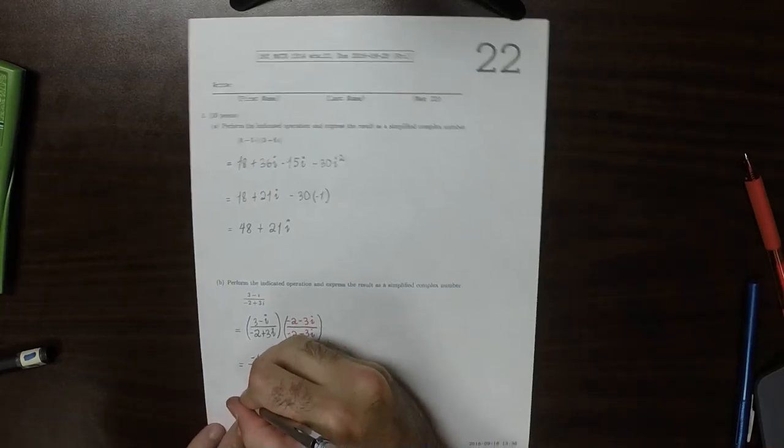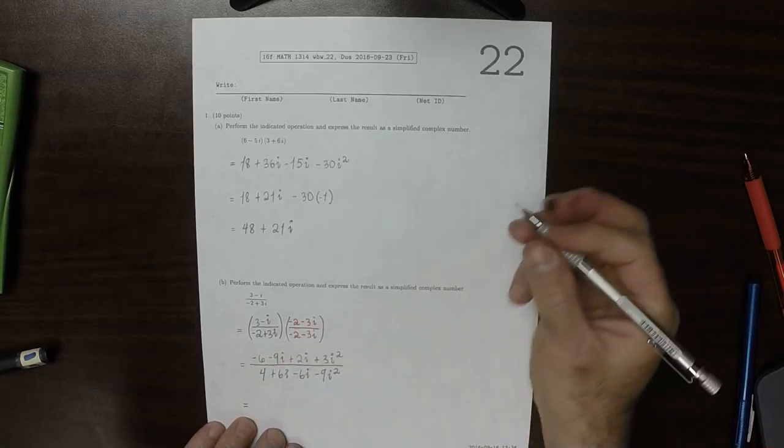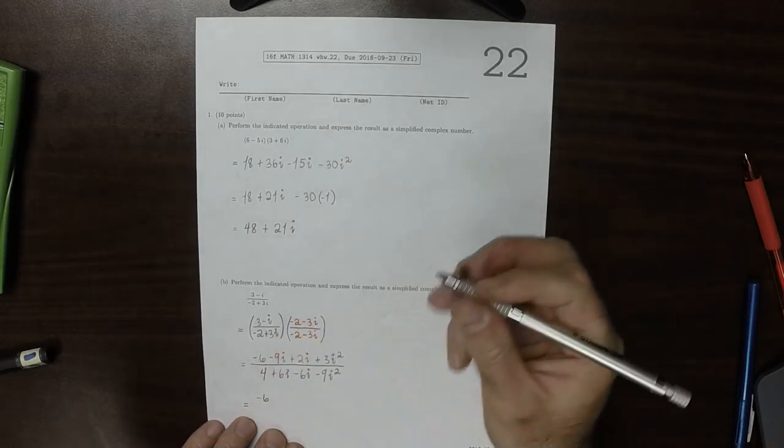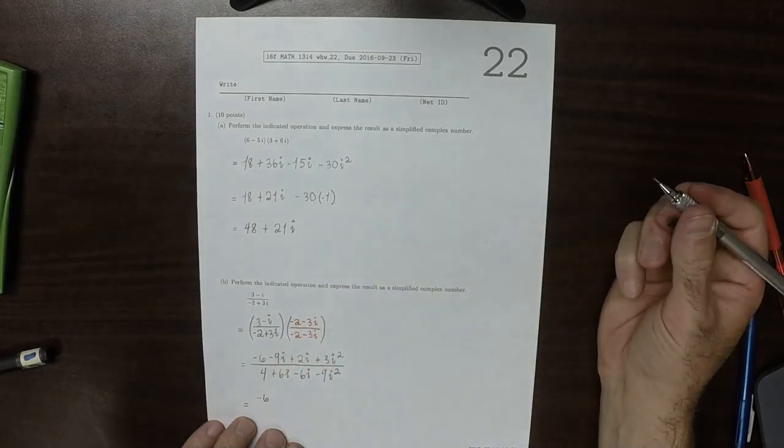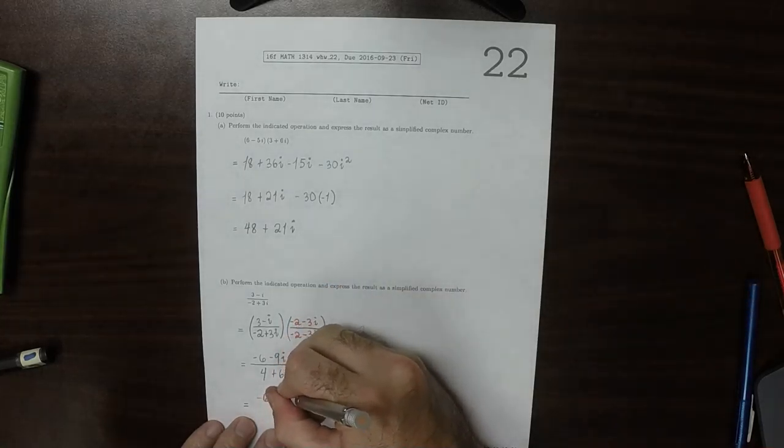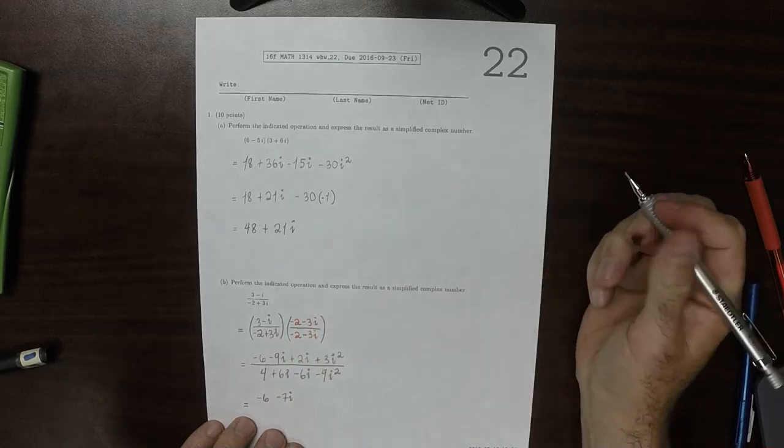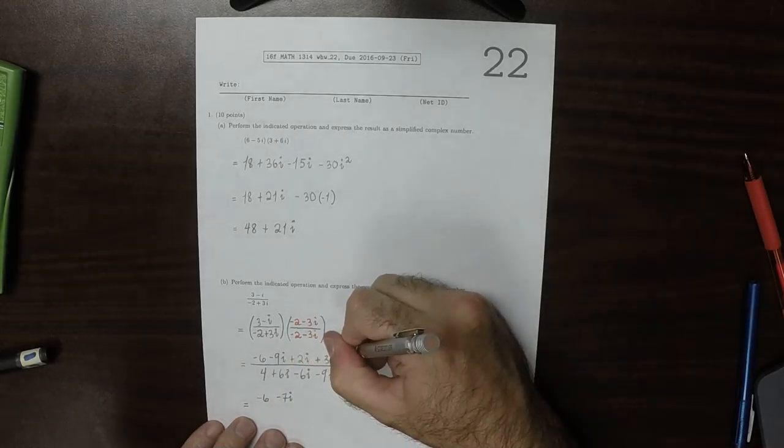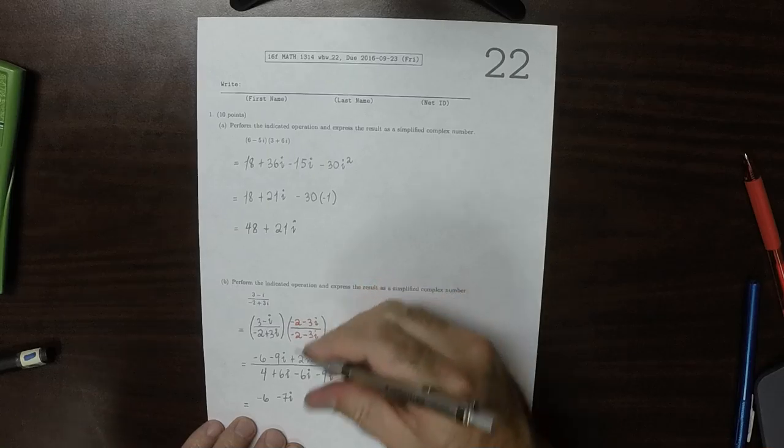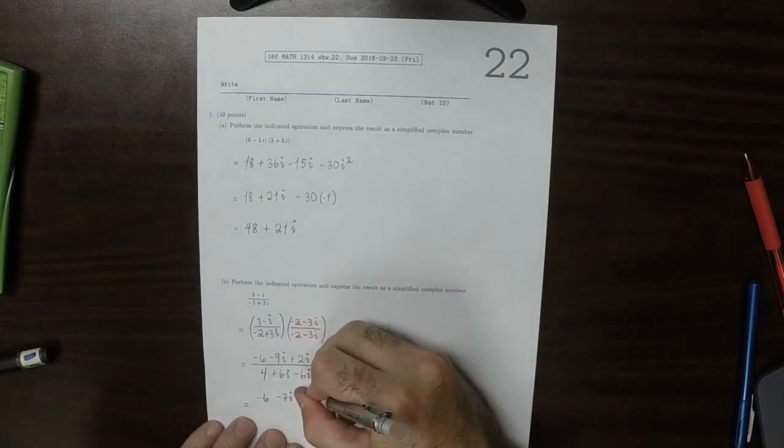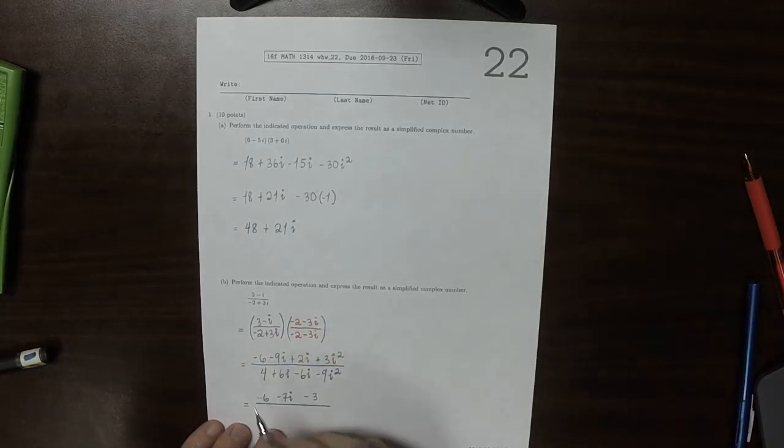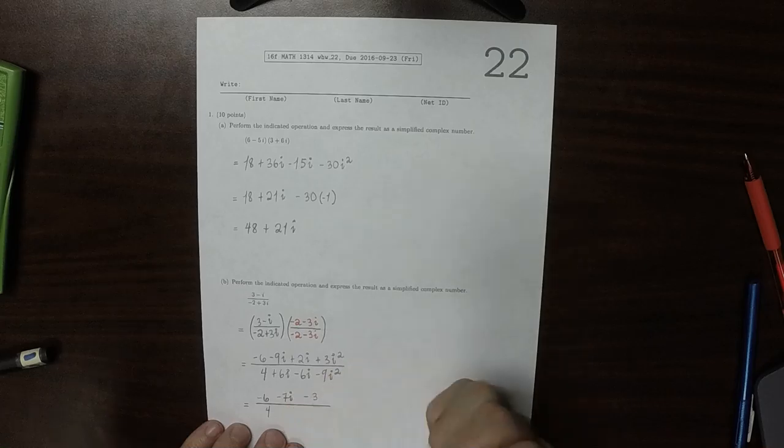Now let's simplify everything. In the numerator, this would be negative 6, and then negative 9i plus 2i is negative 7i, then plus 3i squared. But i squared is negative 1, so that's minus 3.